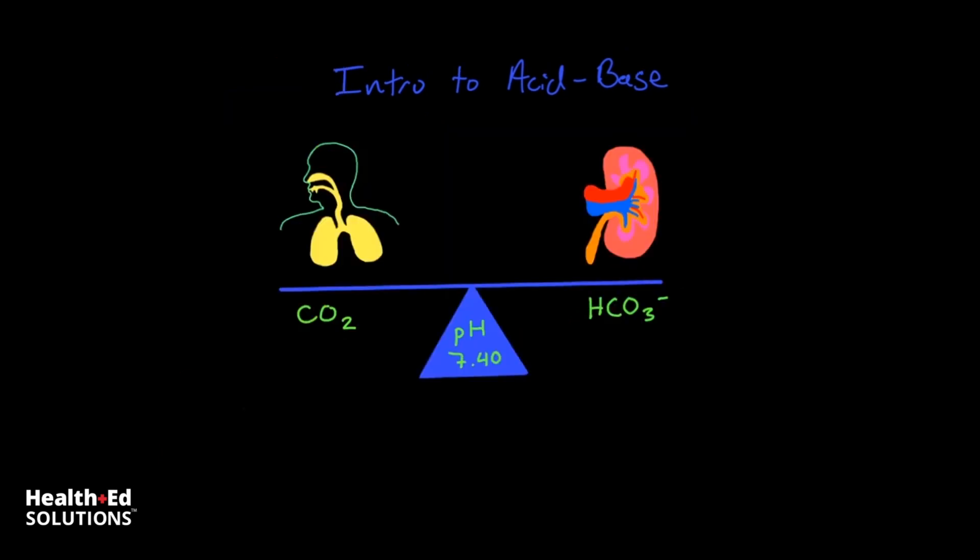So in terms of maintaining the balance between acid and base, and maintaining it in that narrow window between 7.35 and 7.45 pH, the main organs involved are the lungs and the kidneys. And the main molecules involved are CO2, which acts as a volatile acid, and bicarbonate.